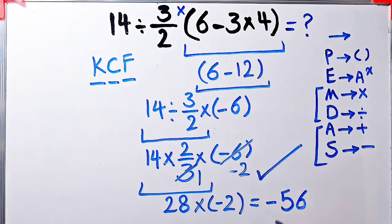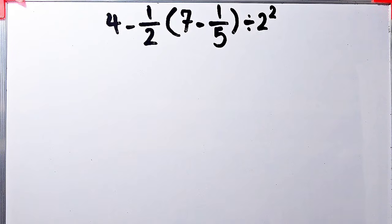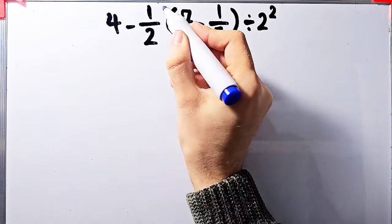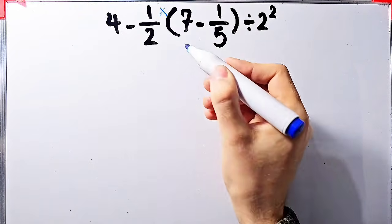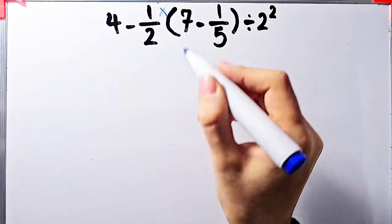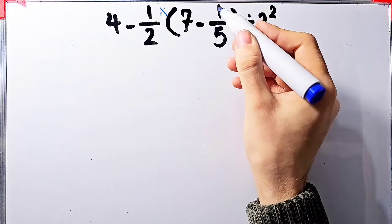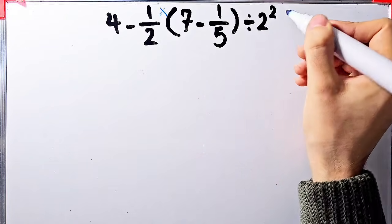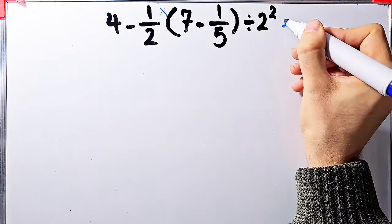If you're ready, let's solve another question about the PEMDAS rule. The second question is: 4 minus 1 over 2, then times open parentheses 7 minus 1 over 5 close parentheses, divided by 2 to the power of 2.